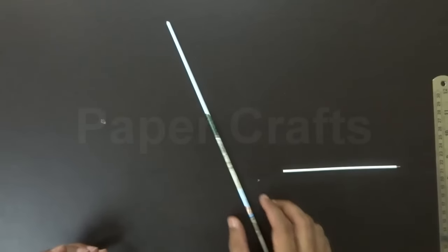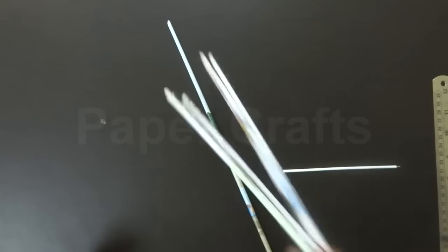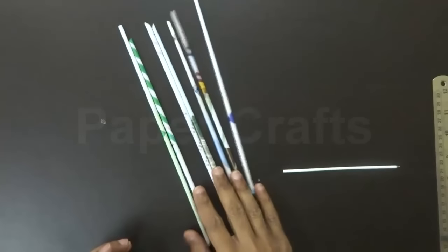Here we are done with rolling a single sheet. In the same way roll a number of sheets. We may need a lot of these to make the lamp shade.